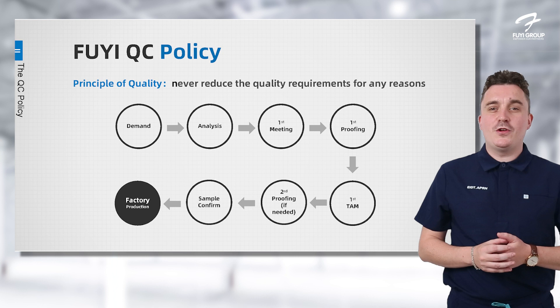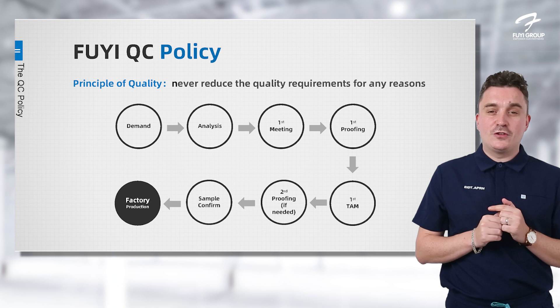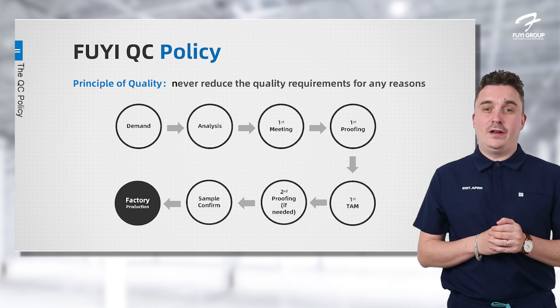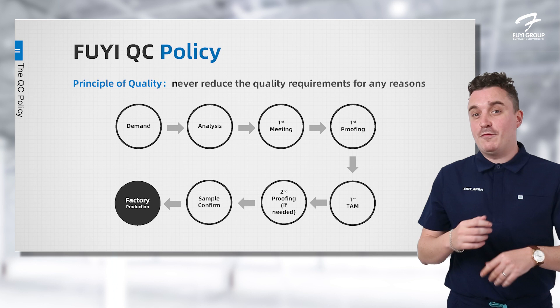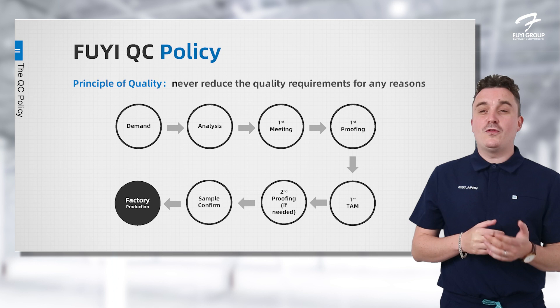On the screen now you can see our first chunk, which is our QC policy. The main tenant of this QC policy is that we never reduce our quality control for any reason whatsoever, which keeps us at 100% QC. Once you've been through the QC policy and understand a bit more about our quality control system, we can move on to your brief and analysis.